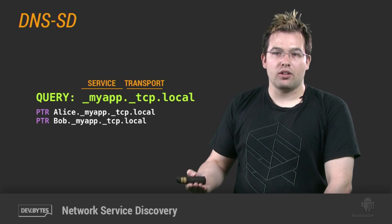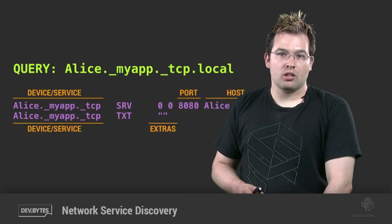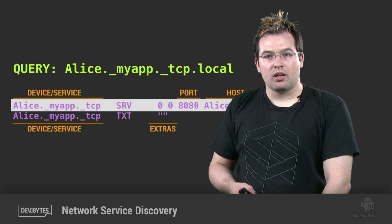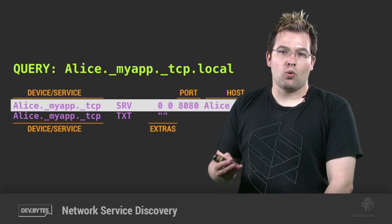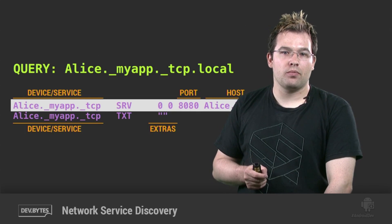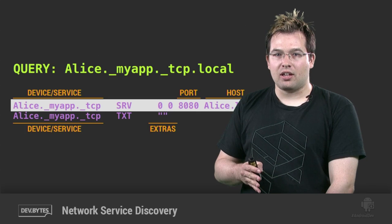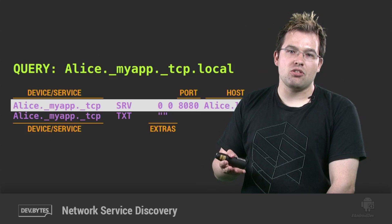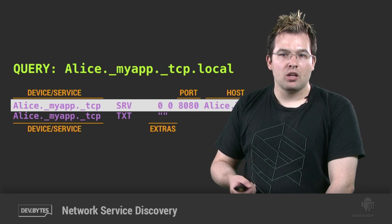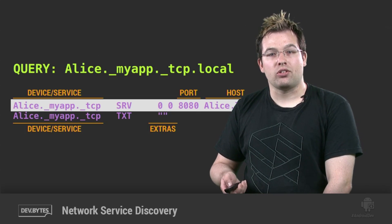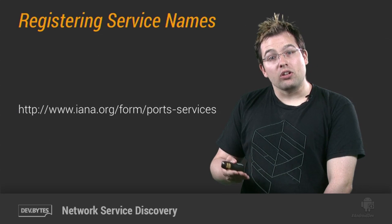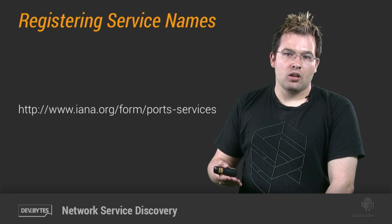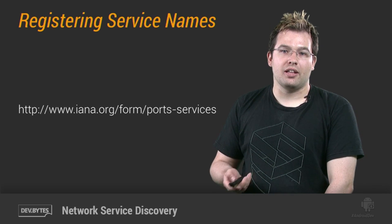Clients can then query on this name to retrieve the listing of devices supporting it. Once a desired device is selected, the IP address, port number, and any other necessary metadata are requested via DNS service, or SRV, records. Since we're using multicast DNS rather than the usual internet DNS infrastructure, there's no need to register these domains with any registrar or pay money. You can simply broadcast them to network peers as needed. That said, it's still a good idea to register your service name with the IANA to prevent name collisions. There's a free service on IANA.org that lets you do this.